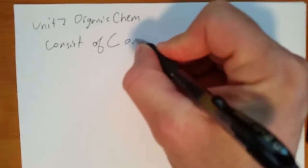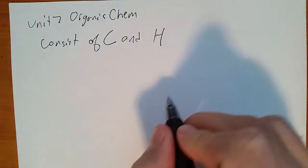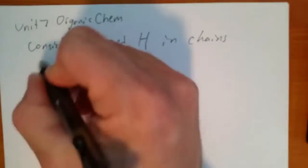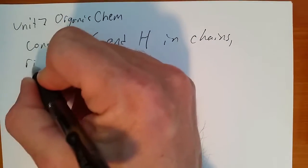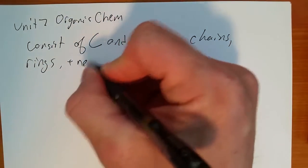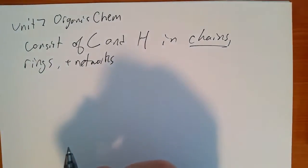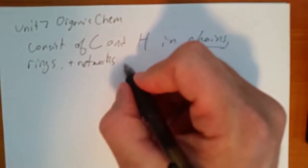Organic compounds consist of carbon atoms and hydrogen atoms in chains, rings, and networks, although we're going to deal mostly with ones in chains, to form all sorts of structures.